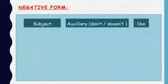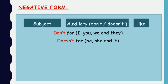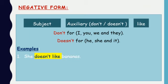The negative form is: subject + auxiliary (don't or doesn't) + like. 'Don't' is used for I, you, we, and they. 'Doesn't' is used for he, she, and it. So you can't say 'he don't like' — you must say 'he doesn't like', 'she doesn't like', 'it doesn't like'.